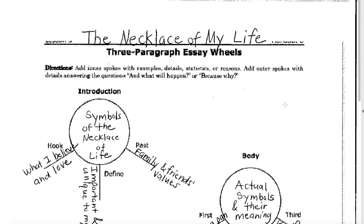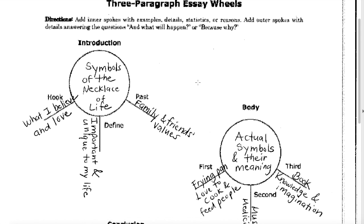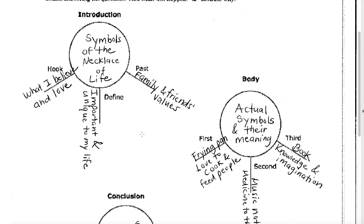One of the topics is called the necklace of life. If you were an artist and you had to sketch a necklace of your life, what would it look like? What would it be? What would it have? Here's my introduction for the first paragraph. The hook is what I believe and what I love, and the definition of the symbols of the necklace of my life are things that are important and unique to my life. In the past, I talk about how my friends and family also have the same values reflected in my necklace.